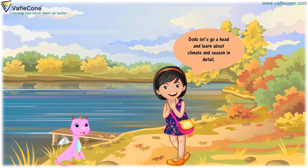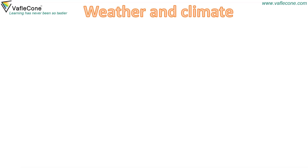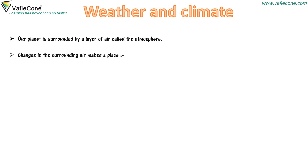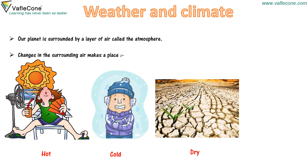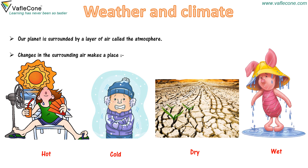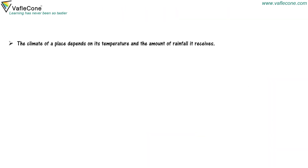Let's go ahead and learn about climate and season in detail. Our planet is surrounded by a layer of air called the atmosphere. Changes in the surrounding air make a place hot, cold, dry, and wet. The climate of a place depends on its temperature and the amount of rainfall it receives.